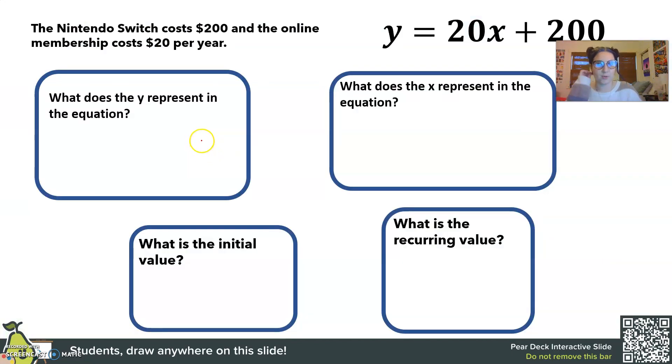Let's answer some more questions. So what does the y represent? Well, we just said the y is going to be my total that I've spent on my Switch and my online membership. And what does the x represent? Well, that's going to be the years. So we have to multiply the membership cost by the number of years.